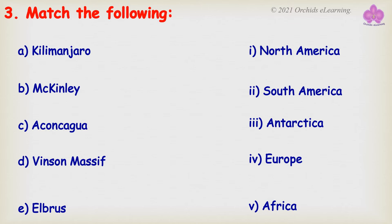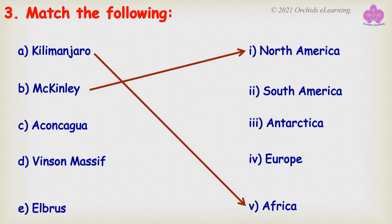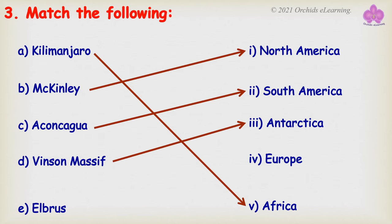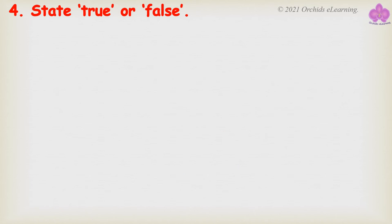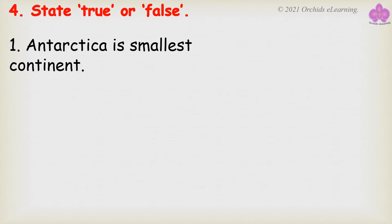Answer: Kilimanjaro — Africa, McKinley — North America, Aconcagua — South America, Vinson Massif — Antarctica, Elbrus — Europe. State true or false: Antarctica is the smallest continent.